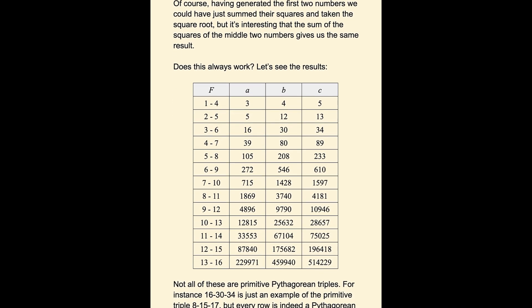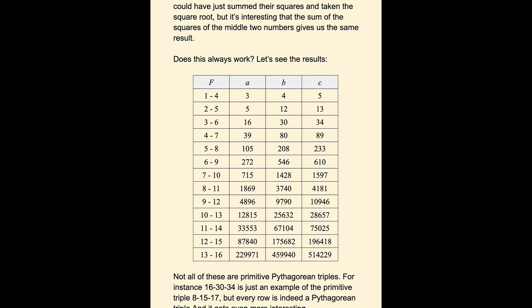Here's a table showing what it looks like for the first 4, and then for F2 through 5, and then F3 through 6, and then F4 through 7. So the first couple of rows, you can see 3, 4, 5, 5, 12, 13. Those are both primitive triples.